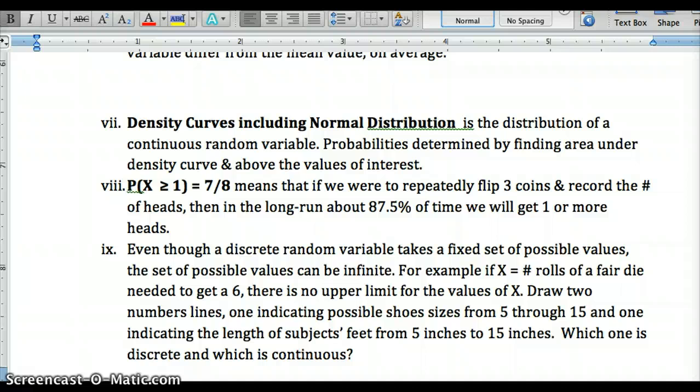A discrete random variable takes a fixed set of possible values, and the set of possible values can be infinite. So if x is a number of rolls of a fair die needed to get 6, there's no upper limit. So we could keep rolling in that case until we get a 6. And we'd likely, in the long run, get one 1/6 at a time on a six-sided die, but who knows with probability. We could just keep rolling and rolling and rolling, and who knows how long it would take. So right now, think about two number lines, shoe sizes from 5 through 15, and then one indicating the lengths of subjects' feet from 5 inches to 15 inches. Which one of those is discrete and which one of those is continuous? Pause right now and try to answer.